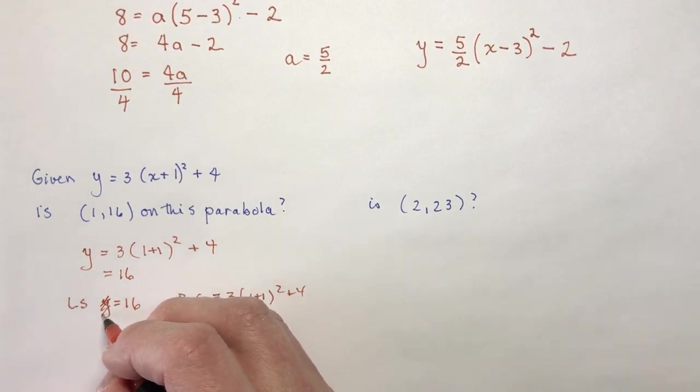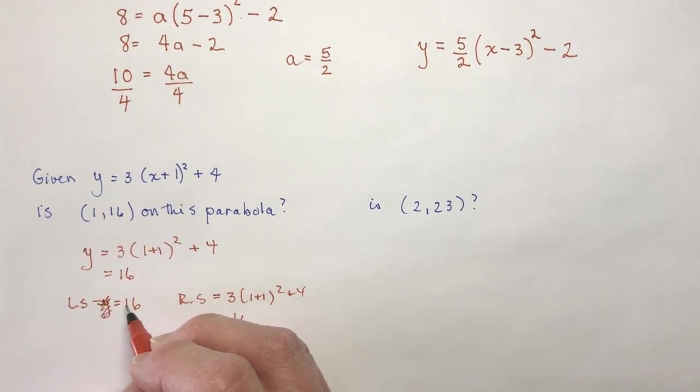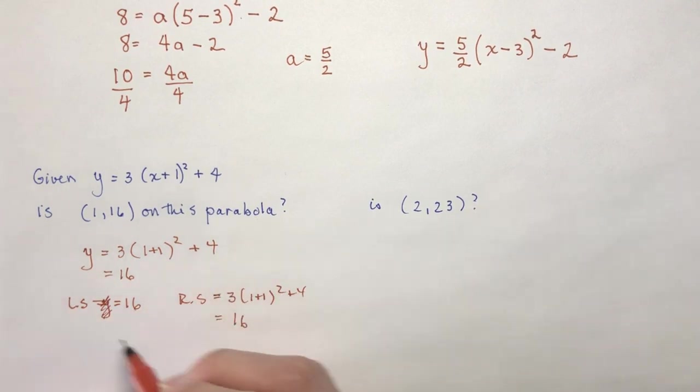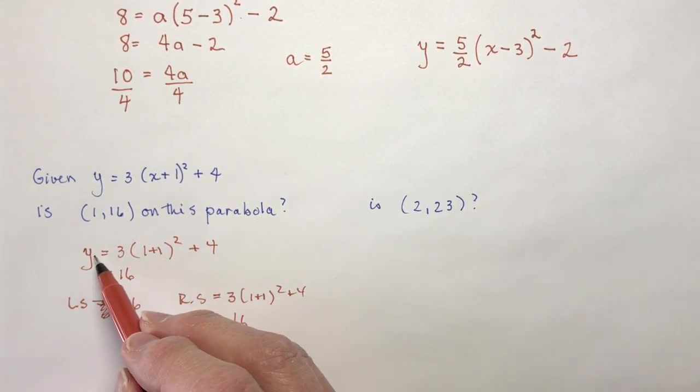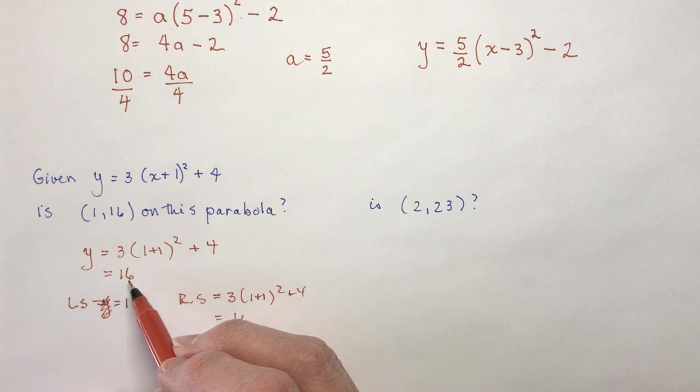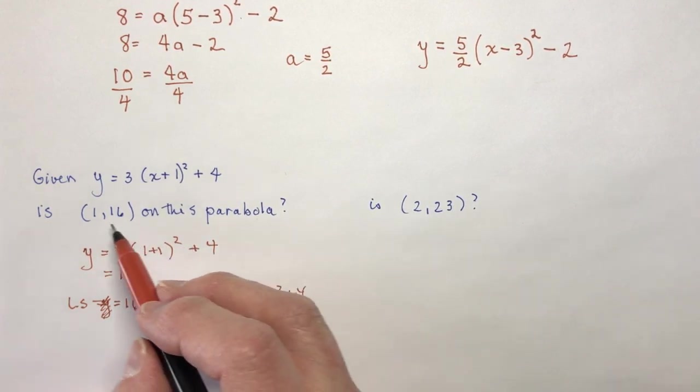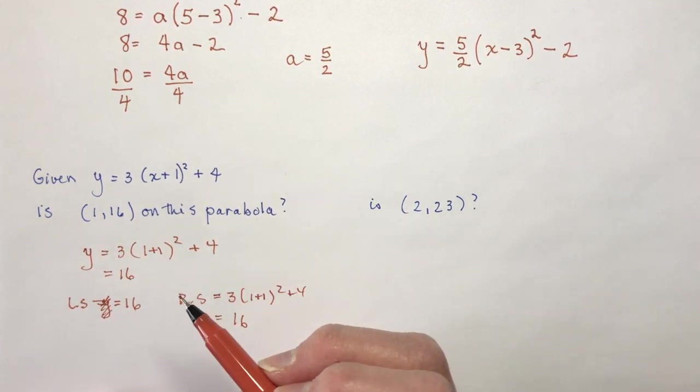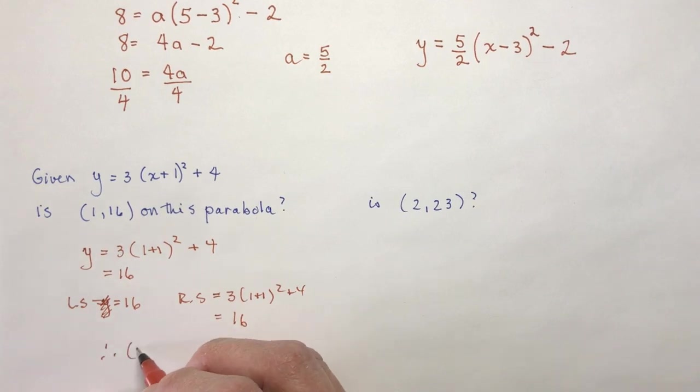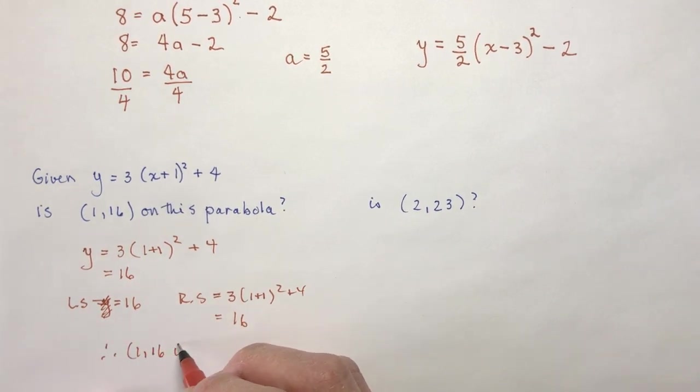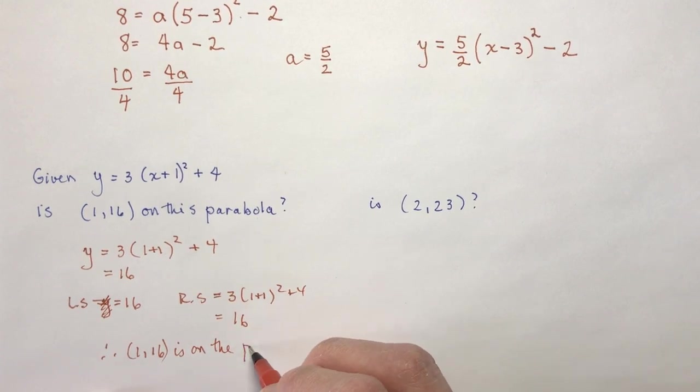I don't know why there. You see left side equals this. You might not be asked to write it up this way. I would say if you plugged it in, you see y equals 16, and that's the point. So therefore, 1, 16 is on the parabola.